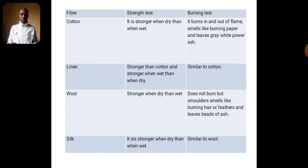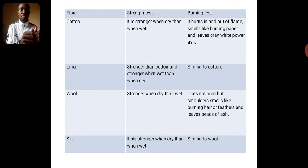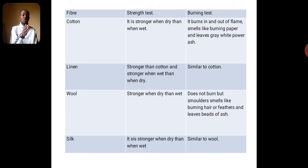Under the strength test, cotton fiber is very strong when dry than when wet. Under the burning test, cotton burns in and out of the flame, leaves gray-white powdery ash, and smells like burning paper. Linen under the strength test is stronger than cotton and stronger when wet than when dry. Under the burning test, linen is similar to cotton.